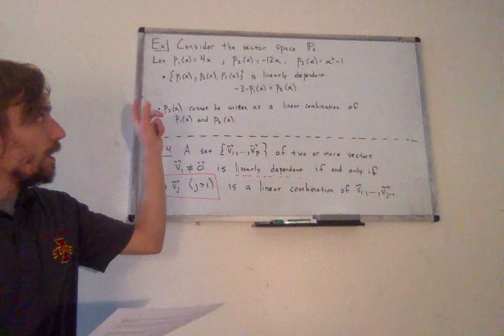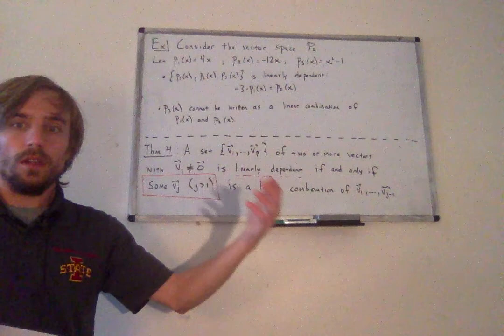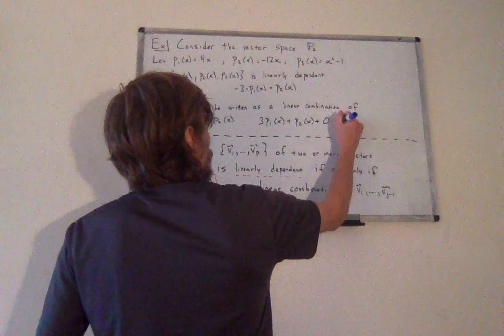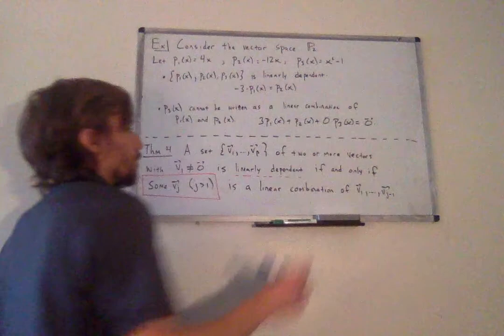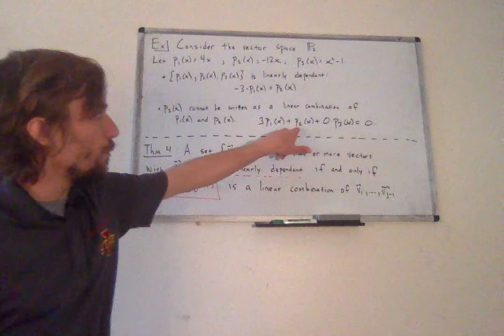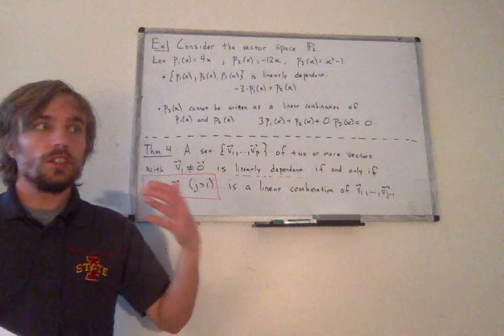If I sum all of these up, I can still get a non-trivial solution to the homogeneous equation. For example, 3·p1(x) + p2(x) + 0·p3(x) = 0 polynomial. This is still a non-trivial solution, even though one of the constants is zero — we just need some of the constants to be non-zero.